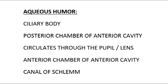Flow of aqueous humor. Aqueous humor is made within the ciliary body, and from there it travels to the posterior chamber of the anterior cavity. From there it circulates throughout the pupil and the lens.